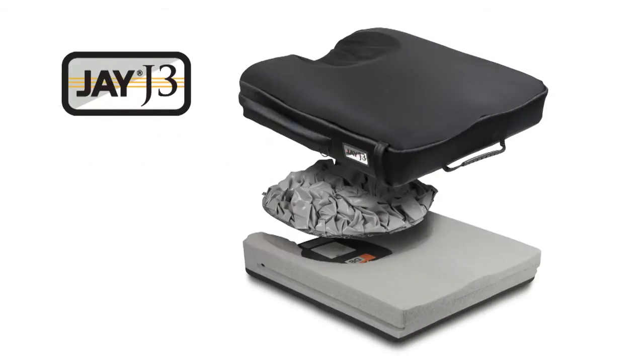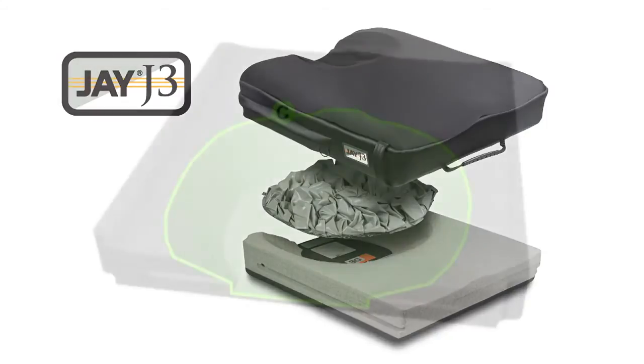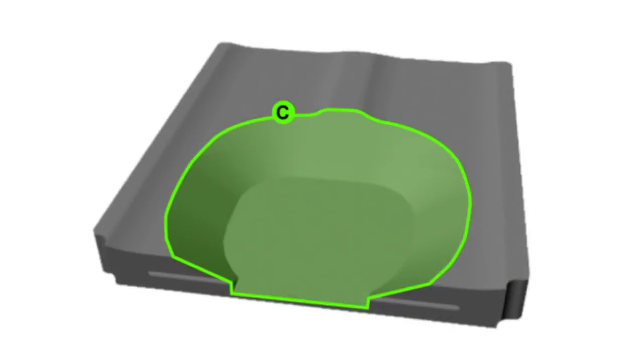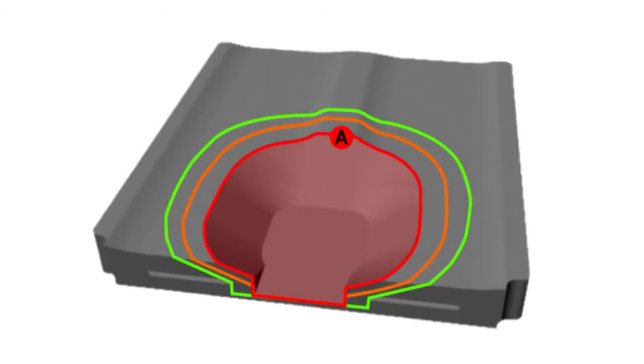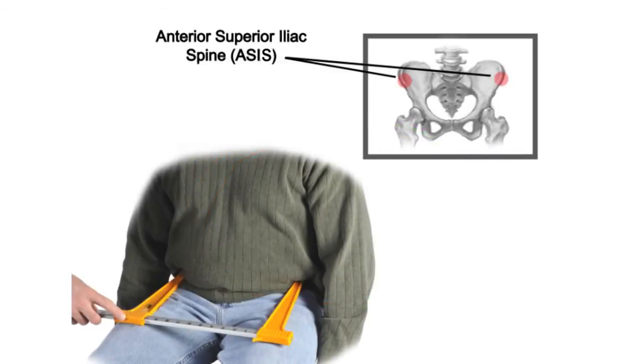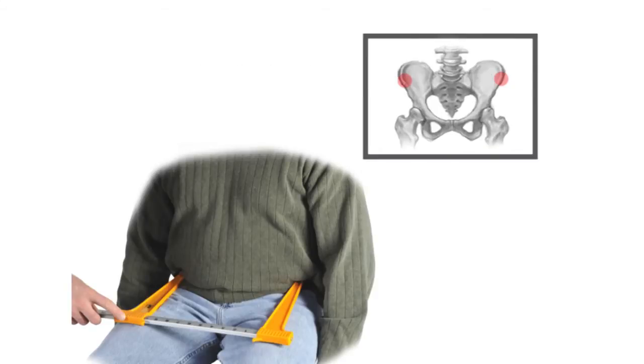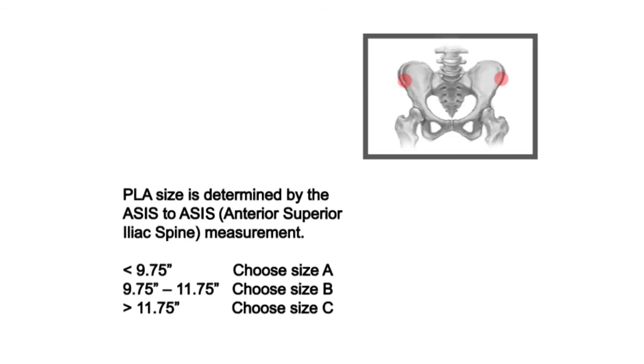Enter the next generation J3 cushion. The J3 cushion is designed with the ability to customize the PLA size based on the user's actual skeletal measurements. As long as clinicians and dealers use accurate measurement tools like these calipers, this is not a problem. But this approach does require paying close attention to both the measurements and the order form.